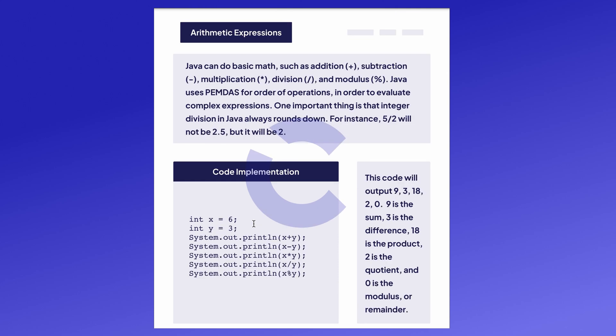Java can also do basic math such as addition, subtraction, multiplication, division, and modulus. Modulus is basically remainder math, so 10 mod 2 would be 0 because 10 divided by 2 does not have a remainder, while 10 mod 3 would be 1 because 10 divided by 3 has a remainder of 1.